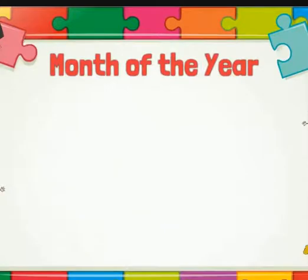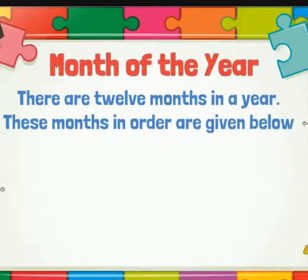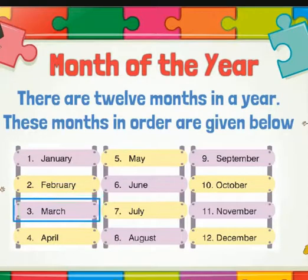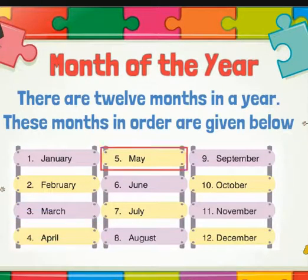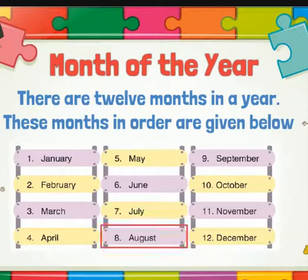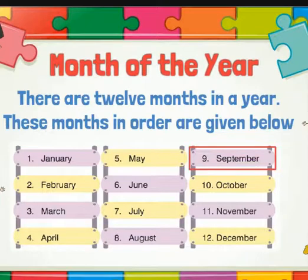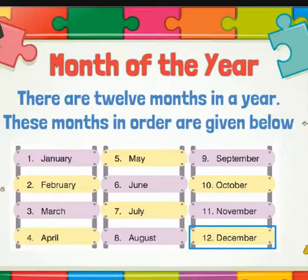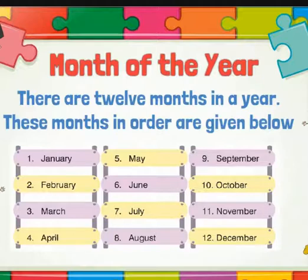Month of the Year. There are 12 months in a year. These months in order are given below: January, February, March, April, May, June, July, August, September, October, November, December. January is the first month of the year. February is the second month of the year. And December is the last month of the year.